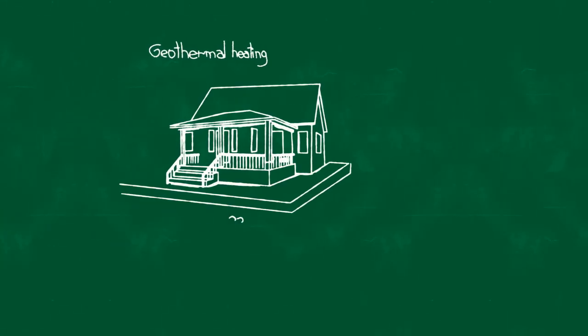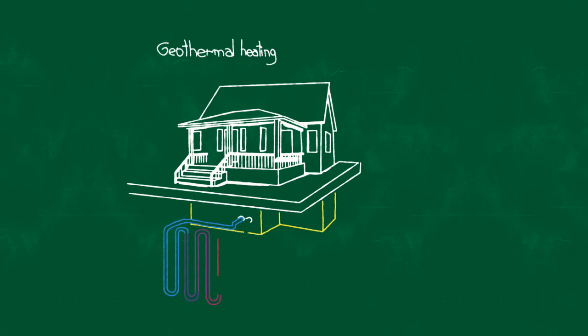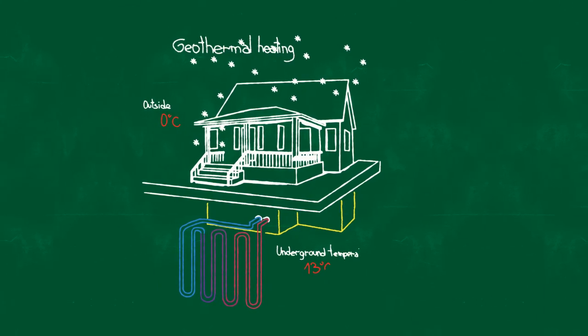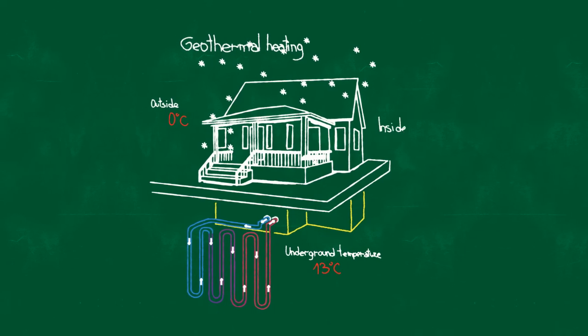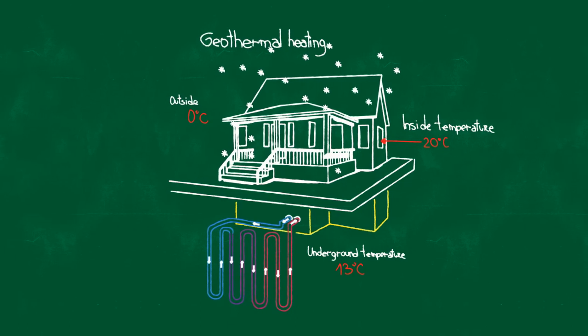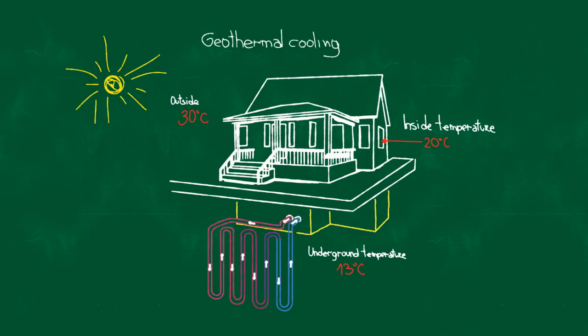Geothermal energy is produced by using the Earth's heat in several different ways. Just a few meters below the Earth's surface, the constant temperature is high enough to supply space heating for homes and commercial buildings during the winter. And when the air is warmer than below ground, the temperature difference can be used to cool buildings.